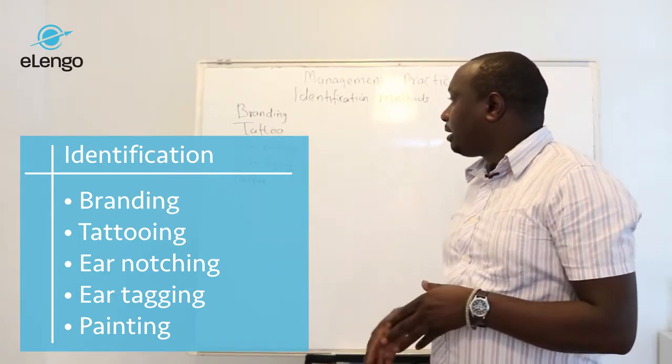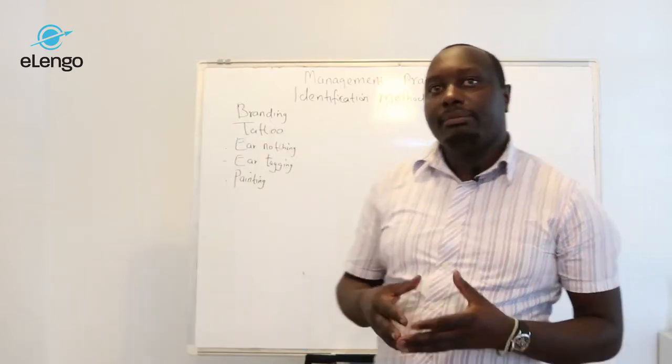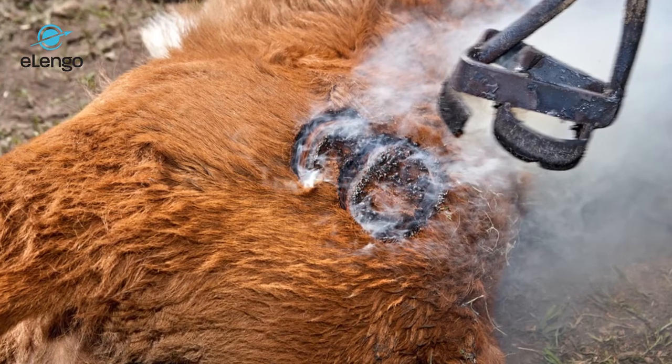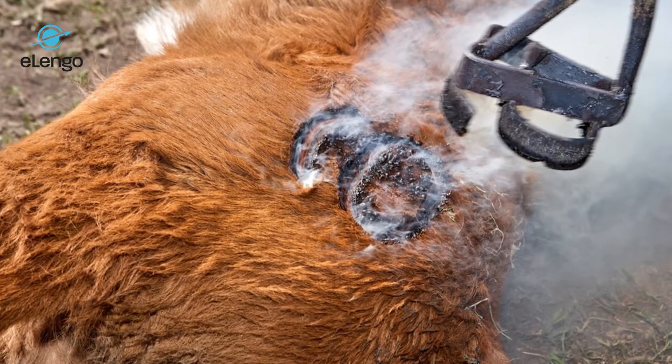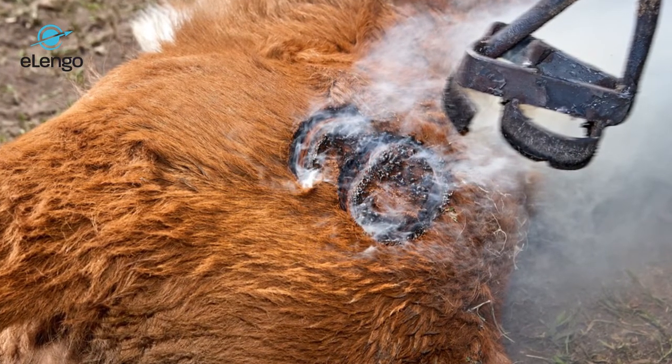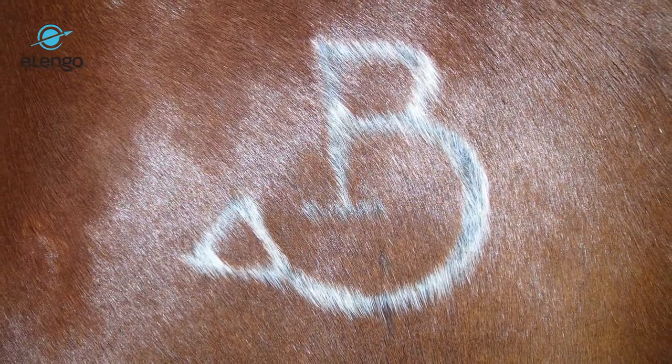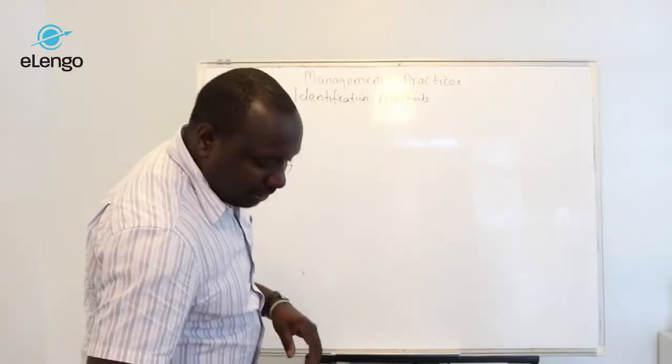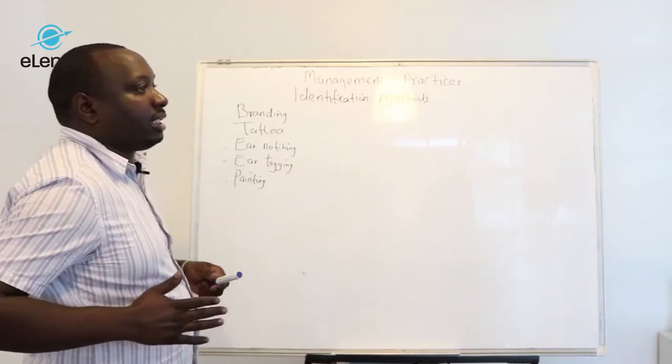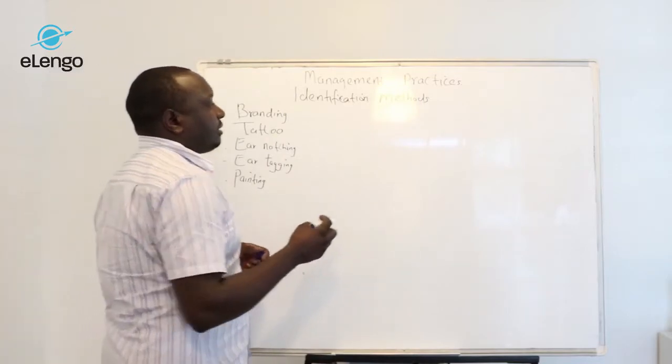For branding, this basically involves having a metal object which bears a certain number. You heat the metal and press it on the animal, and the number is left on the skin of that animal.